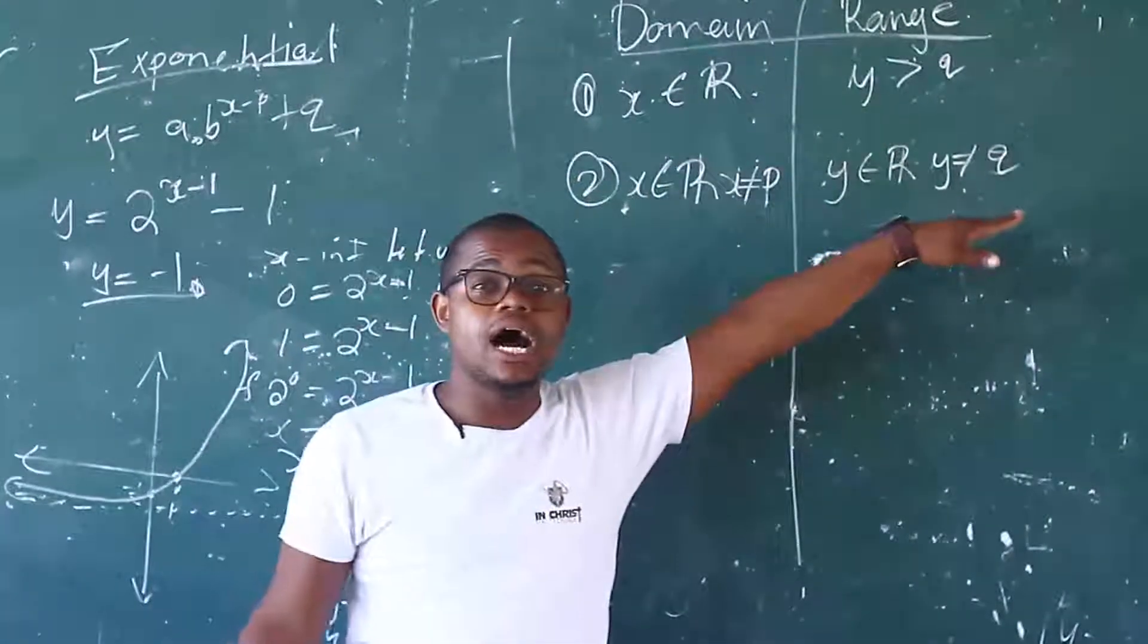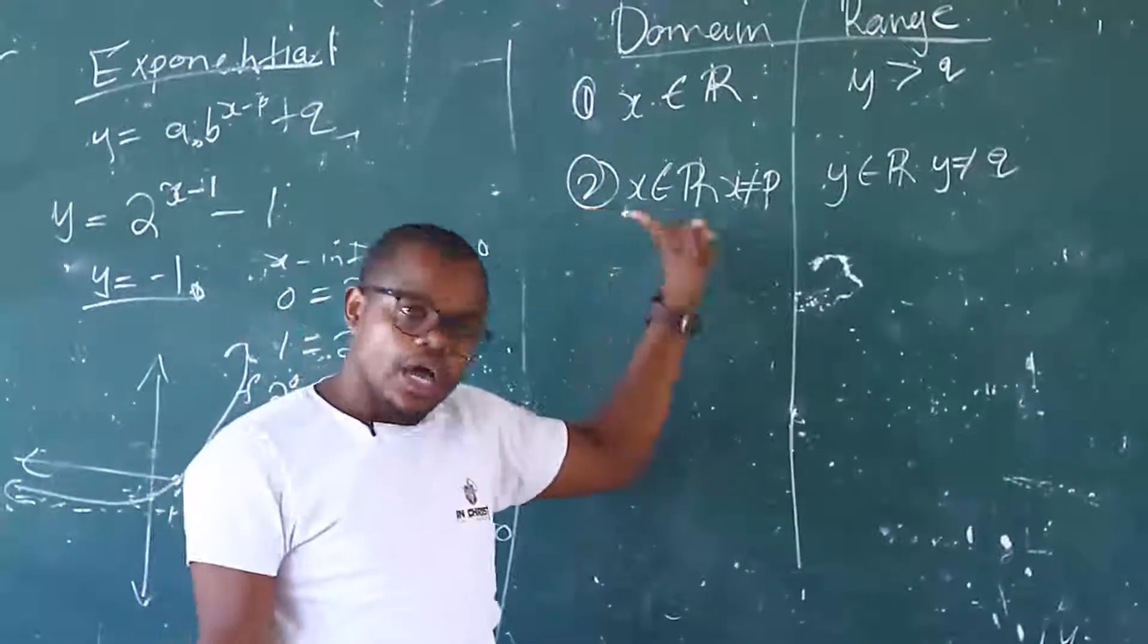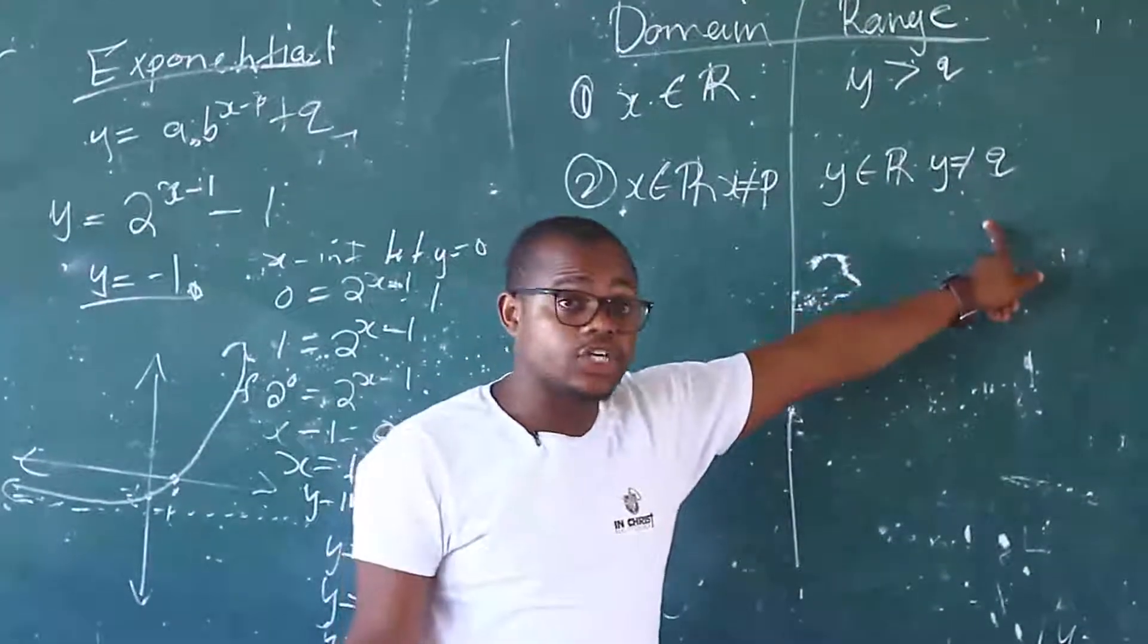That is the hyperbola. They can give you 2 marks for this. So this is the domain. This is the range of a hyperbola. Okay?